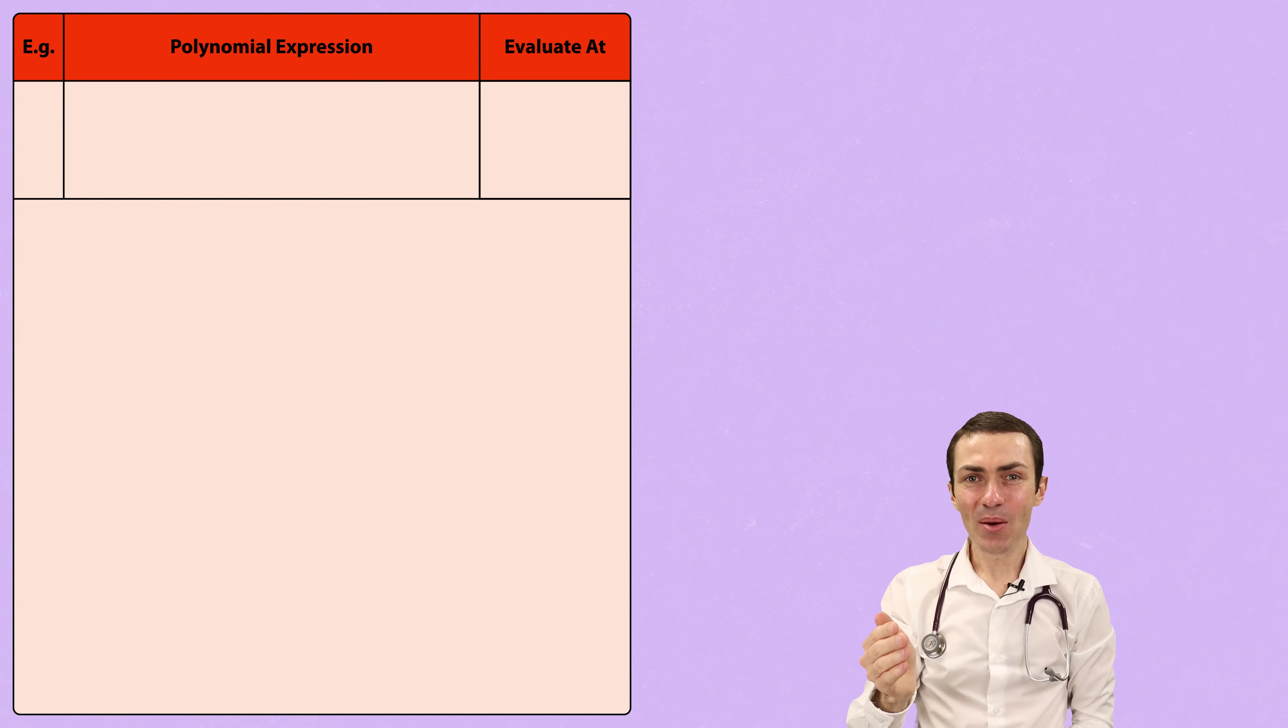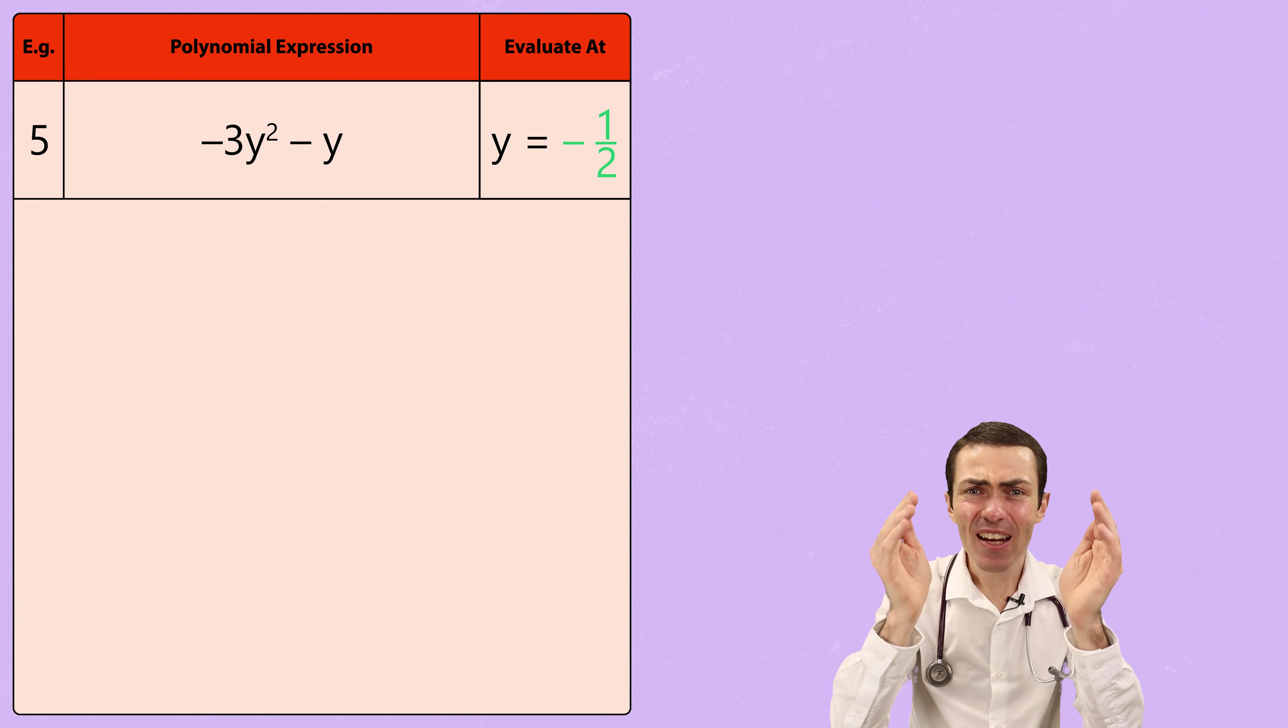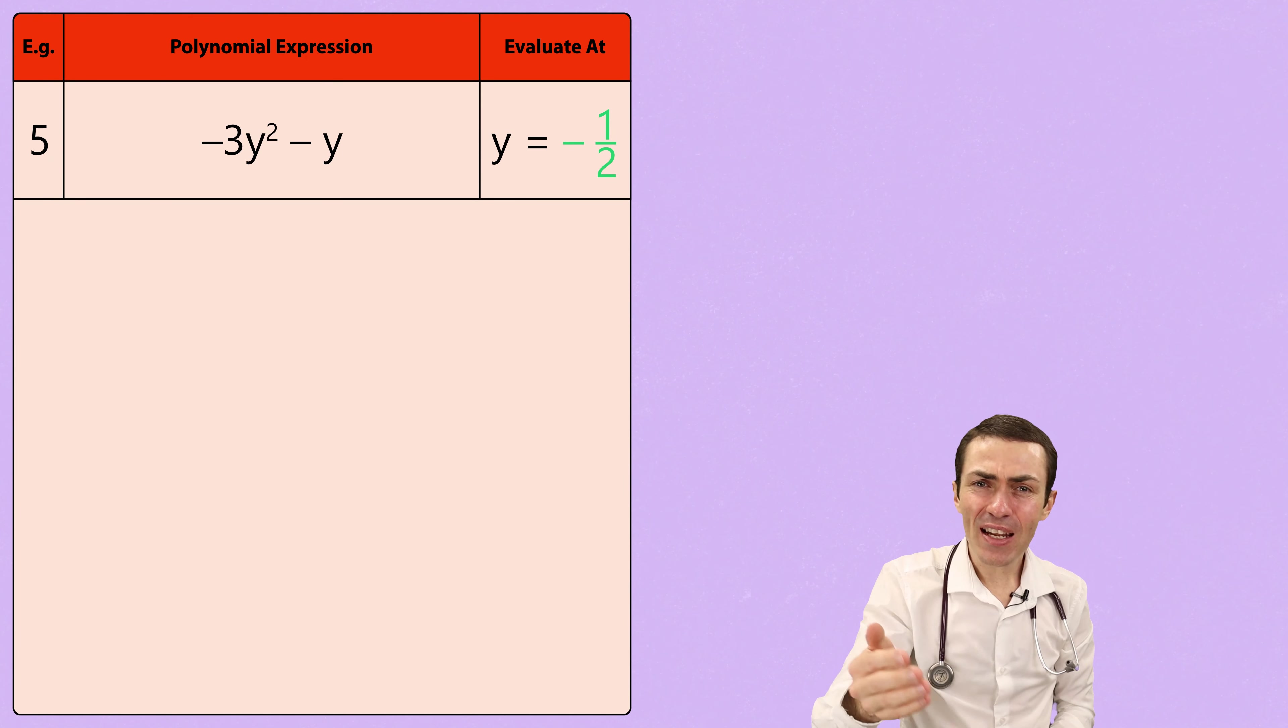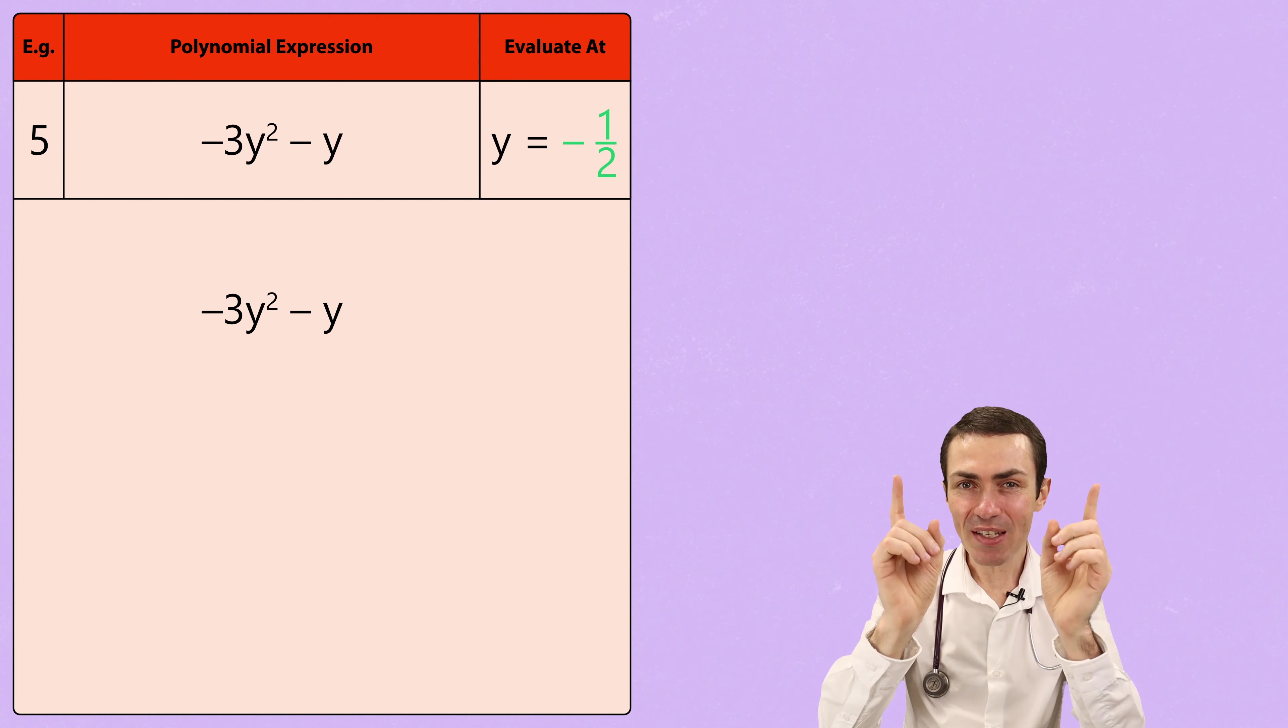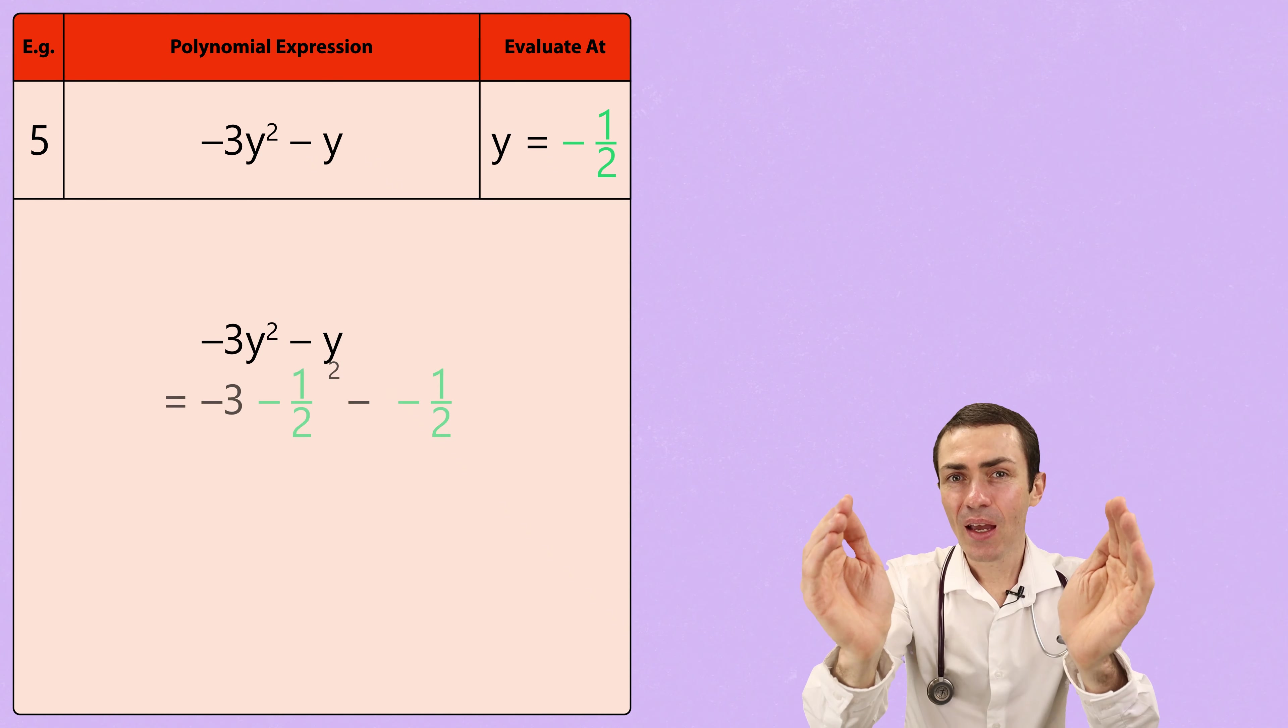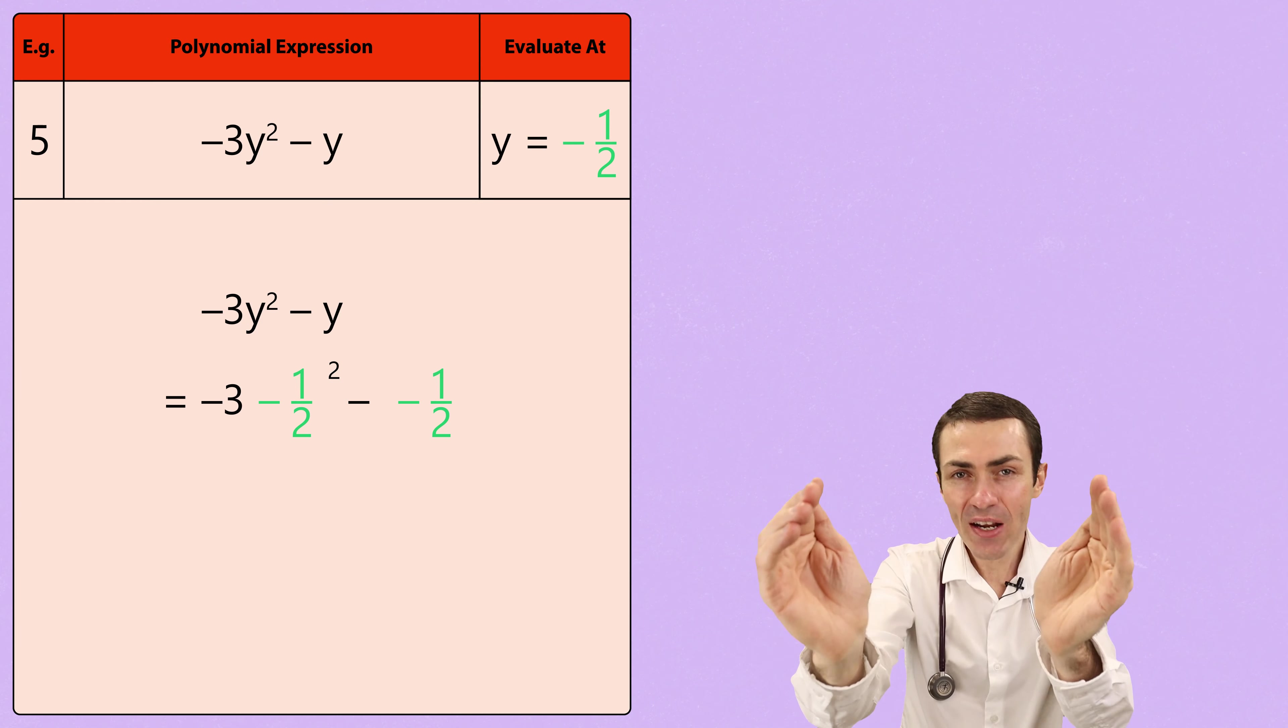Let's ramp things up a little by evaluating a polynomial into which we need to substitute a fraction. That's right, a dreaded fraction. A polynomial like minus 3y squared minus y seems harmless enough, but we do have to be careful. Now, wherever we see a y, we need to replace it with the fraction minus 1 over 2. And be sure to put the fraction inside brackets or parentheses.